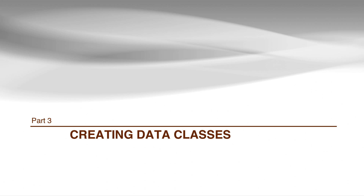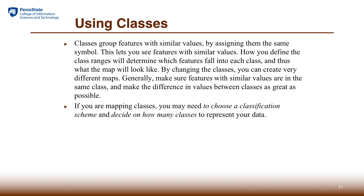We're going to talk about how to create classes in the next few slides. When we put features into a class, we mean that those features are relatively similar in relation to a certain application or question. By assigning them into a group and visualizing them with a similar symbol, we can easily make them perceivable as similar or closely related features. We can change the definition of a class, and that definition will depend on the questions we want to answer. This is an opportunity to make features more identifiable by the intended application.